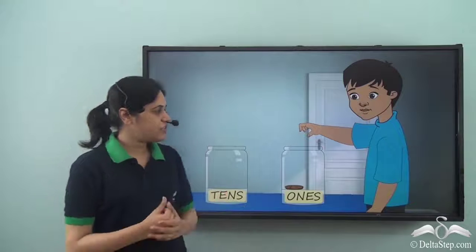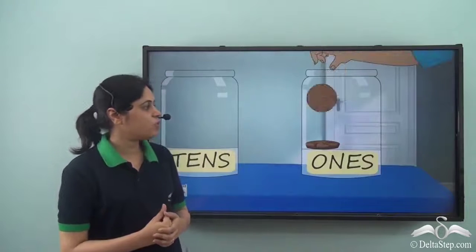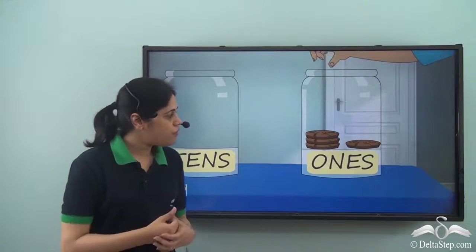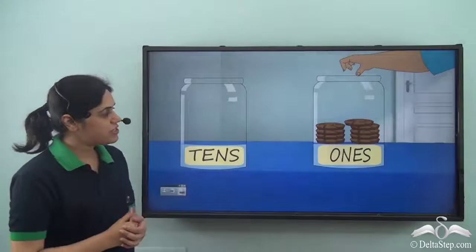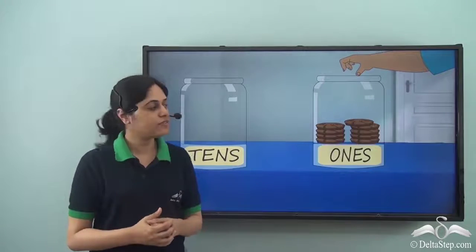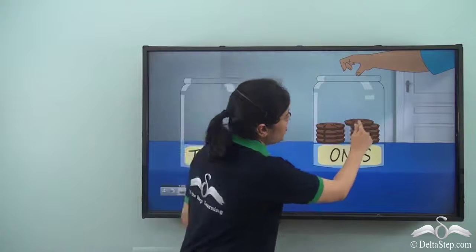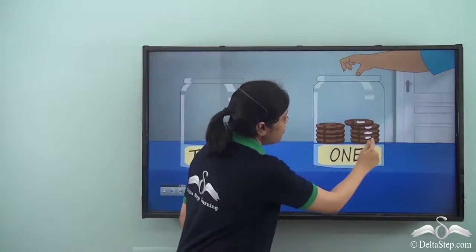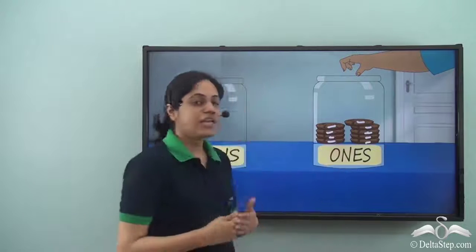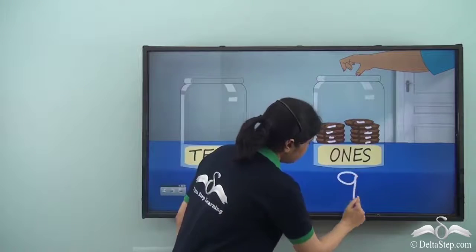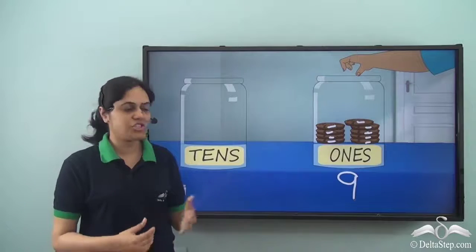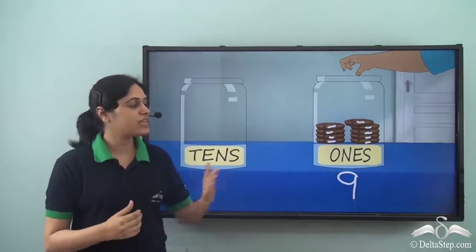He started with the ones jar and put one, two, three, and four cookies in the ones jar. He kept on adding cookies in the ones jar till he reached nine cookies. So we see that he has already added nine cookies in the ones jar.